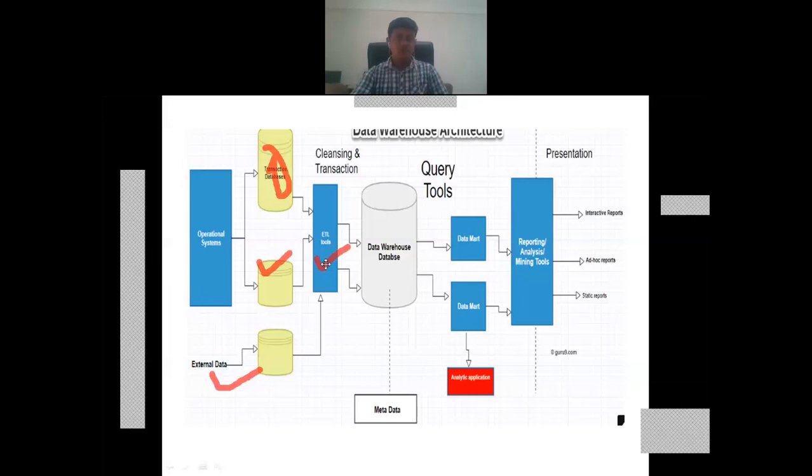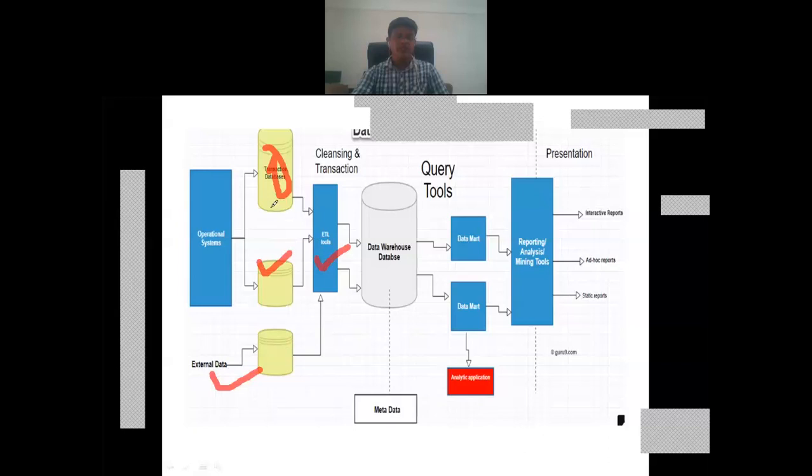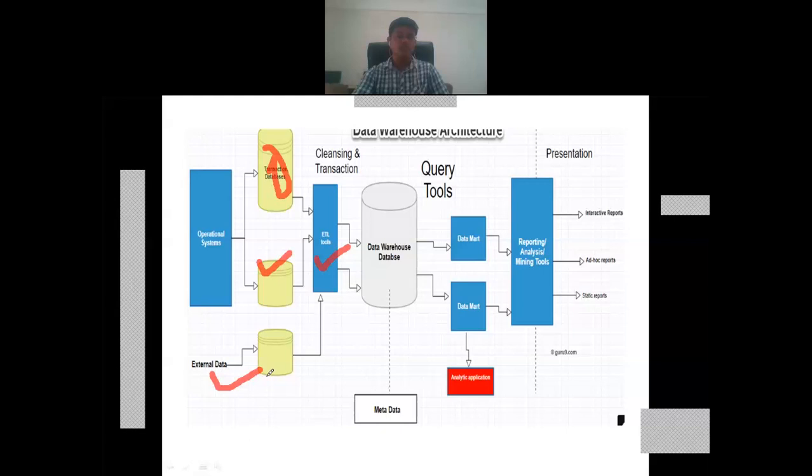It means we will perform some pre-processing tasks with the transactional databases. Because as in the previous lecture I explained, the data are not fully of high quality. We need to remove some noisy data, we need to fill some unavailable data like data with null values. We need to replace them by some suitable value and so on.